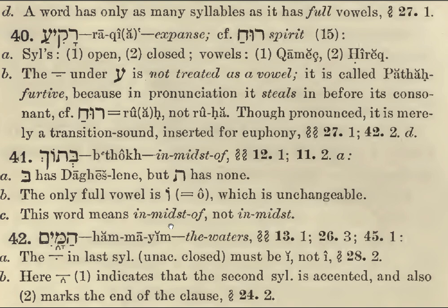In the middle of HUM MAYYIM — HUM MAYYIM. We have one vowel, two vowels, three vowels: HUM MAYYIM, the waters. The accent mark on the last syllable indicates that this is the accented syllable: HUM MAYYIM, not HUM MAYYIM. It also marks the end of a clause — that's the halfway point in a sentence.